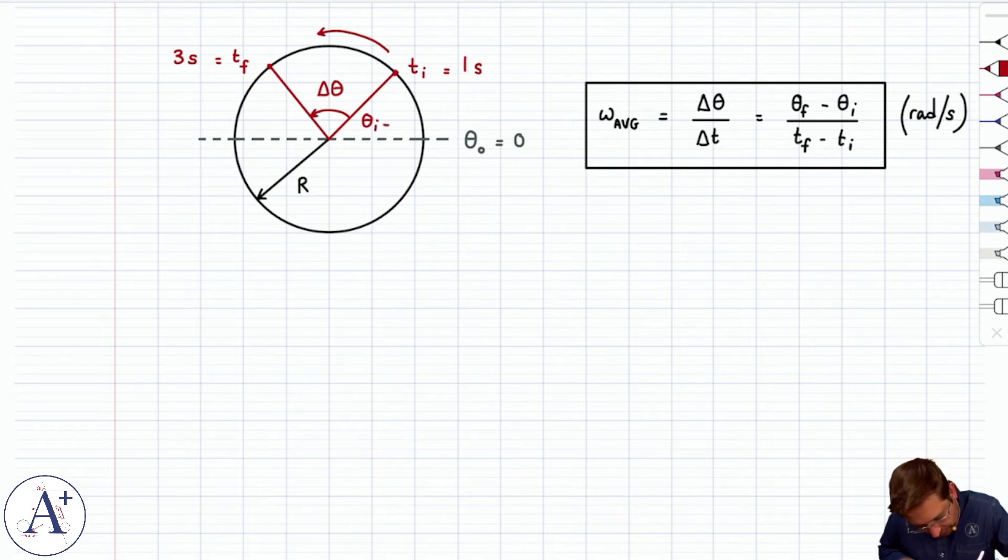Theta initial, I guess we could call it here, is going to be, let's stick to pi over 4, we've been doing that, and then theta final, although it's getting a little cramped here, there we go,